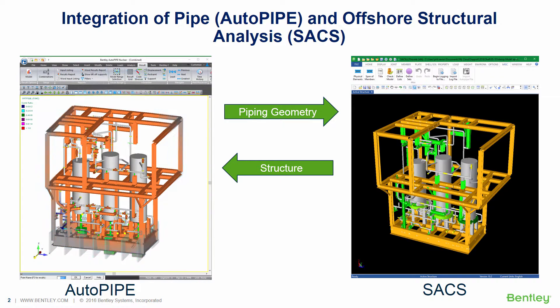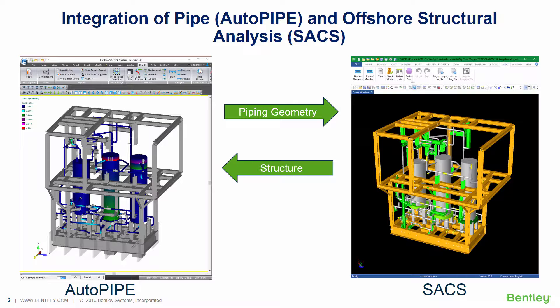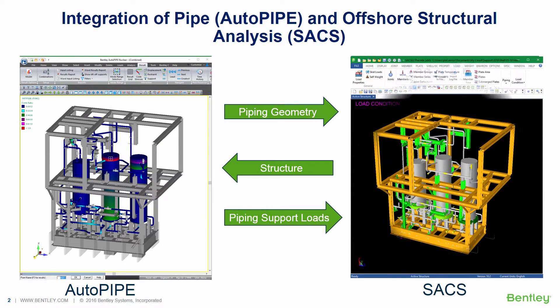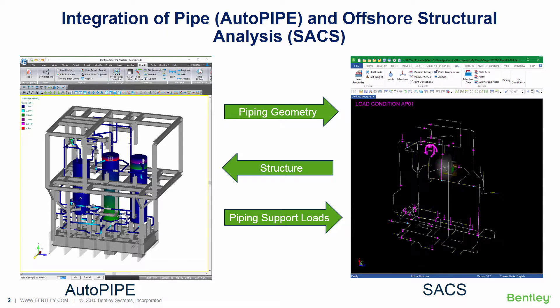In AutoPipe, we do a combined analysis which more accurately includes the structural stiffness and weight. We then transfer more realistic piping loads to SACS, which are automatically applied to the structural model. This saves hundreds of hours of manual data entry.